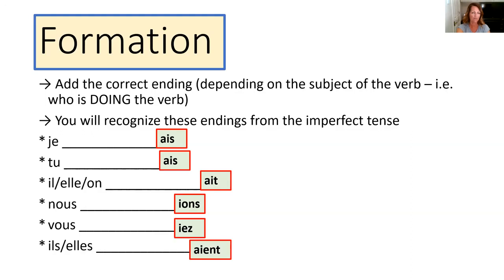Nous takes IONS; vous — talking to more than one person or someone you're being formal with — takes IEZ; and ils/elles (they) takes AIENT. You would choose 'ils' for a group of boys or a mixed group, and 'elles' for a group of girls.